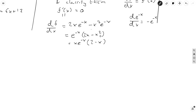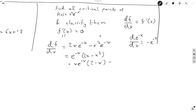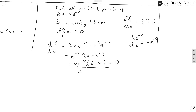Now we need to think about when this equals zero. Since e to the minus x is always positive and never equals zero, we can divide across by it. So this is equivalent to x times 2 minus x equals zero. Therefore x equals 0 or x equals 2 — those are our two critical points.